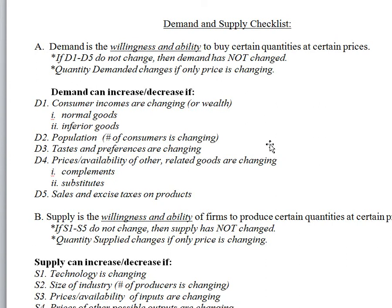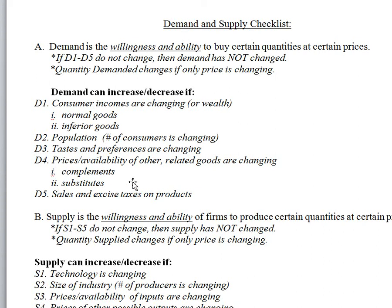The prices and availability of other products can also change the entire price-quantity relationship — specifically complements and substitutes. Complements are things that go together, like peanut butter and jelly or ice and Coca-Cola: when the price of one goes up you consume less of the other. Substitutes are things used instead of one another, like iced tea and lemonade: if the price of iced tea goes up you'll buy less lemonade even if lemonade's price hasn't changed. These factors change demand, not quantity demanded.